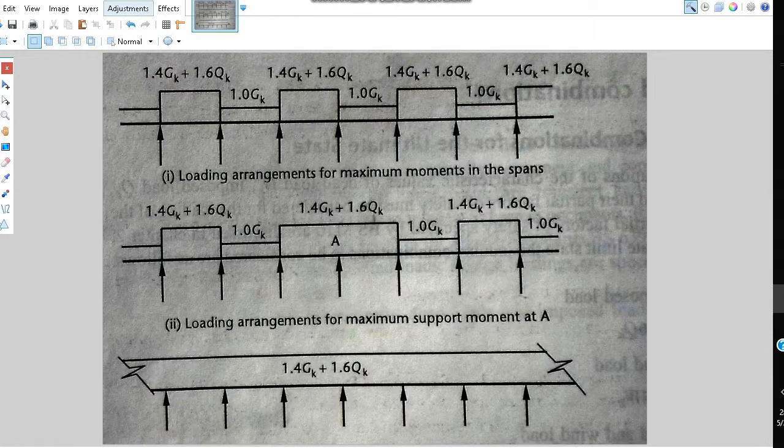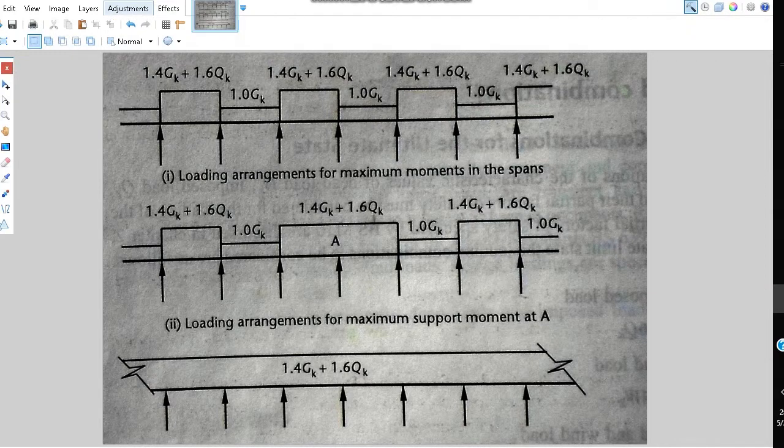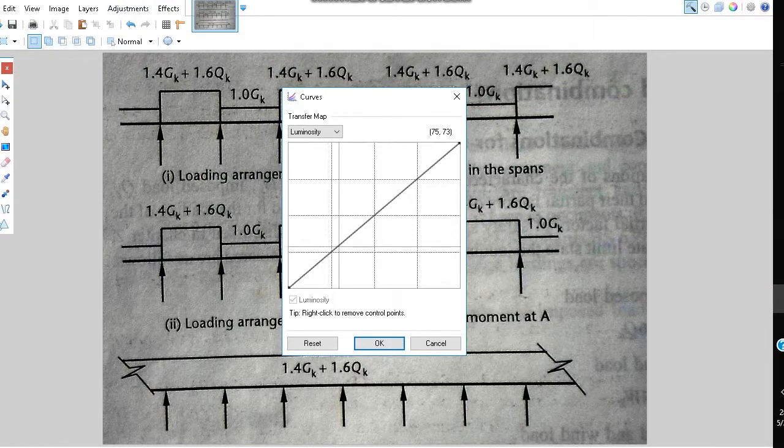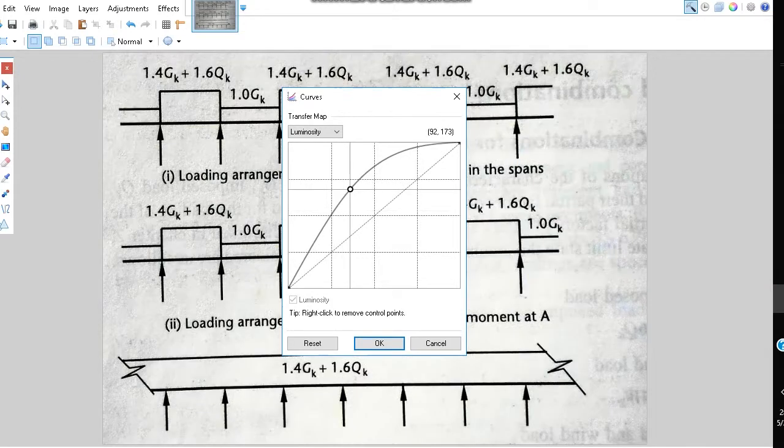Finally, to change the dark grey background to white, click Adjustments, then Curves. Click and drag the luminosity line at the top left until all background becomes white.